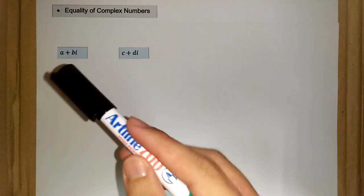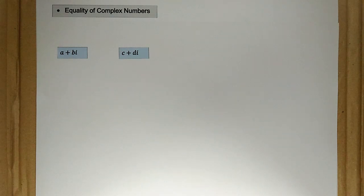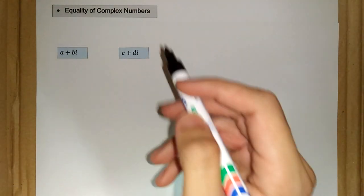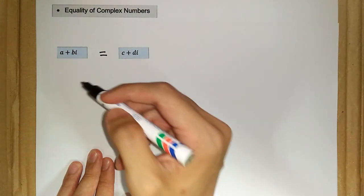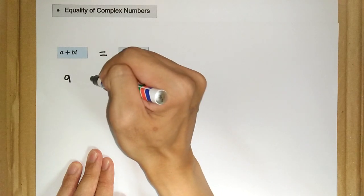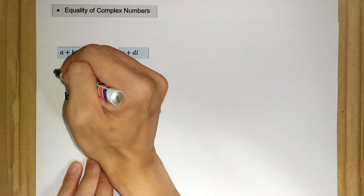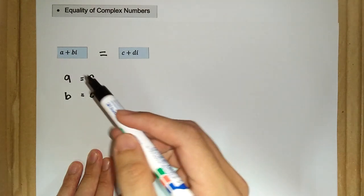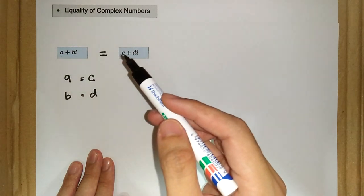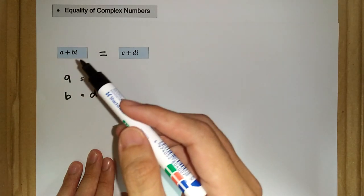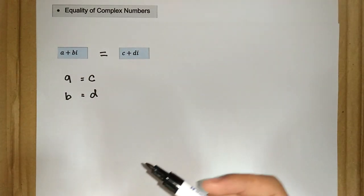Let's say we have these two complex numbers. The first one is a plus bi and the second one is c plus di. If the first complex number is equal to the second one, then we have a is equal to c and b is equal to d. So what this means is the real part of the first complex number is equal to the real part of the second one, and also the imaginary part is also equal. This is what we mean by the equality of two complex numbers.